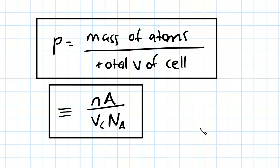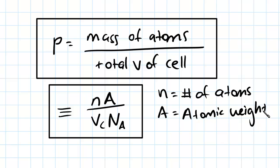So what does that mean? Well, when we say n, we mean the number of atoms in the cell. When we say A, we mean atomic weight.